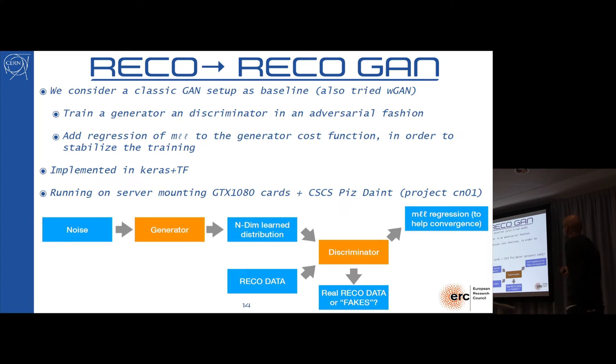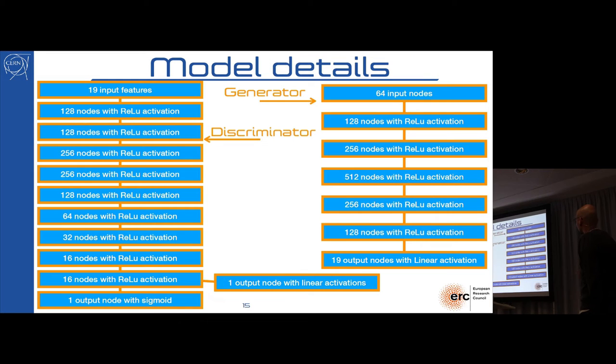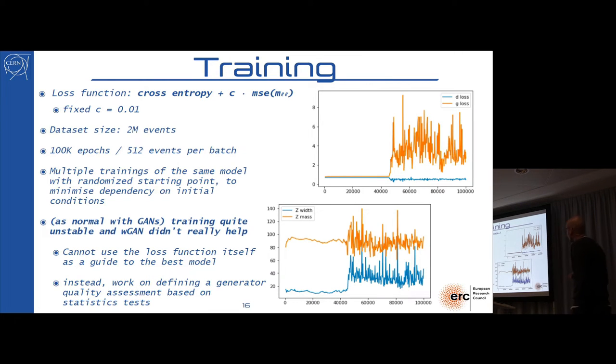The first thing, the Rico to Rico. The idea of the network in this case is, again, a GAN. We have a generator discriminator. The generator takes as input some random noise and generates this n-dimensional array of expert features that you compare with the real ones into the discriminator. You also add the regression stabilization of the MLL, of the invariant mass of the two leptons. This was implemented in Keras with TensorFlow. We're running on our own single-card GPU, but then also tested at CSCS. We got a GPU project accepted for some GPU hours there and tried some larger-scale training.